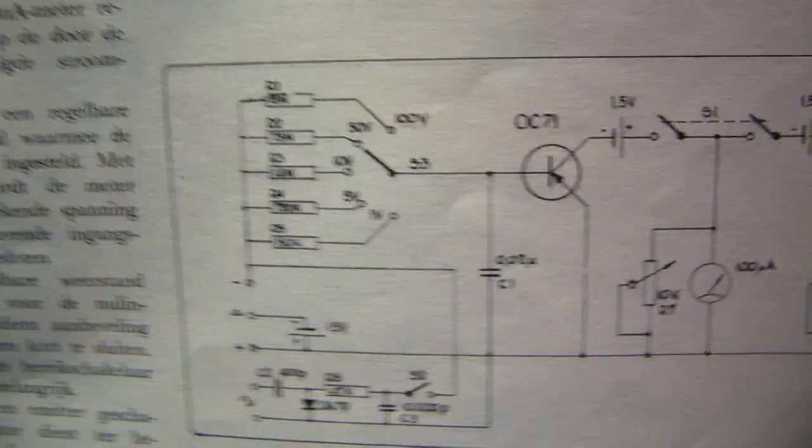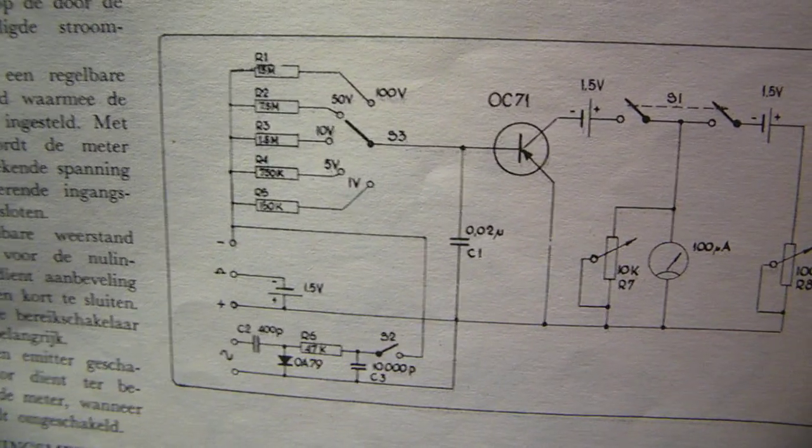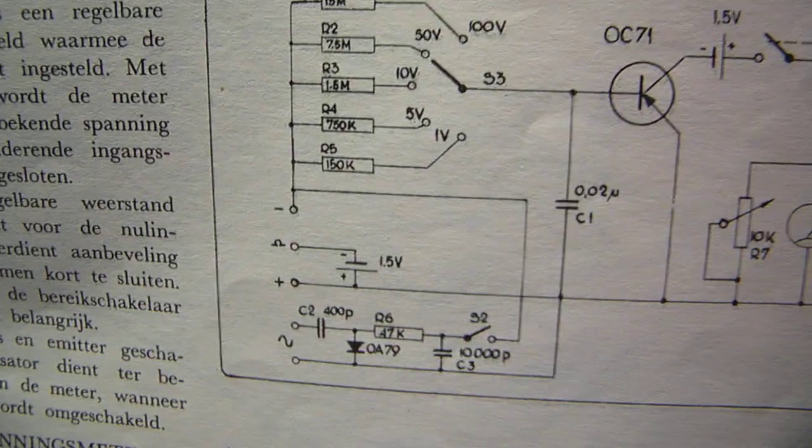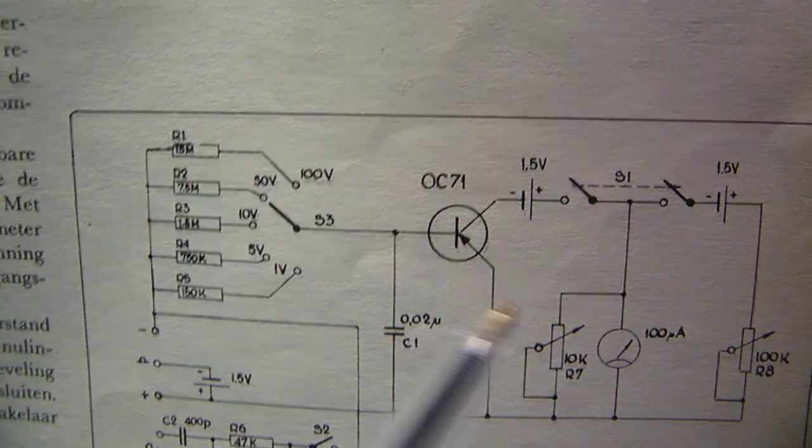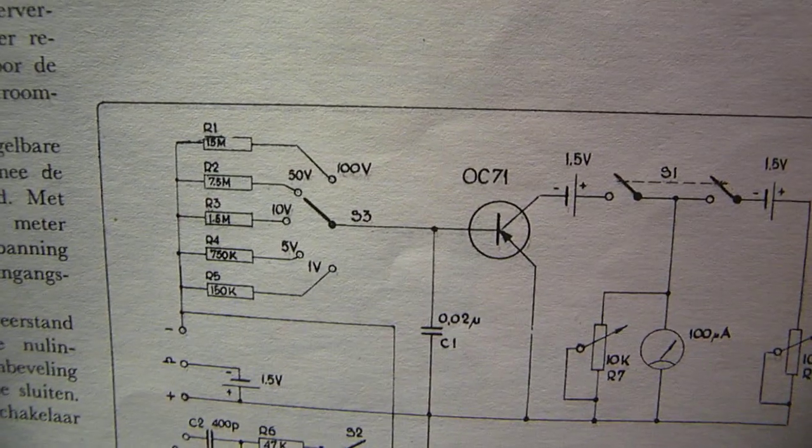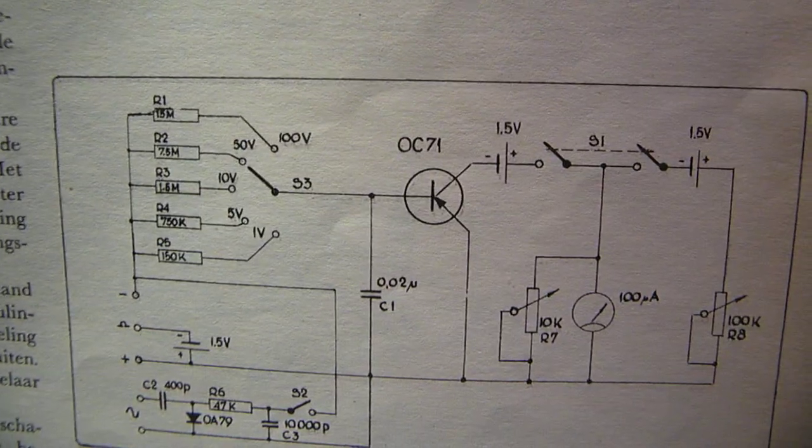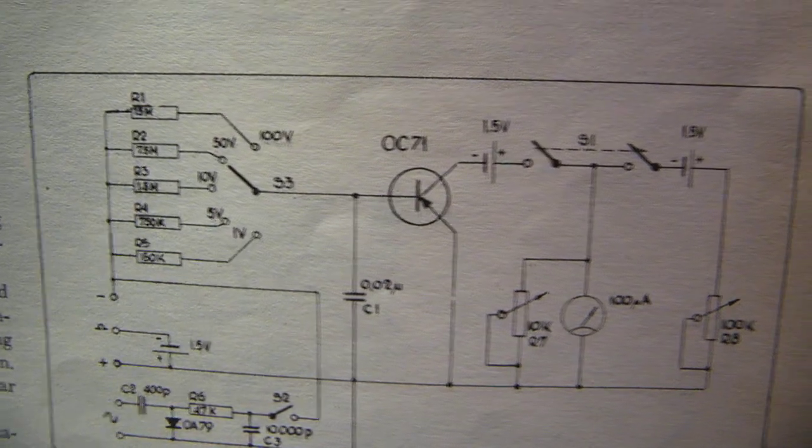But nowadays we have good multimeters that can measure the ohms resistance very properly. So in my opinion the interesting thing is here the voltmeter with its extremely high impedance at its input.